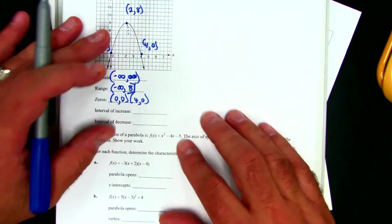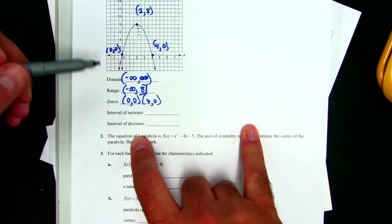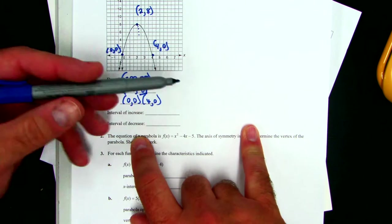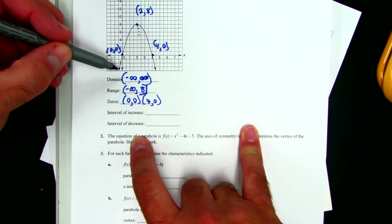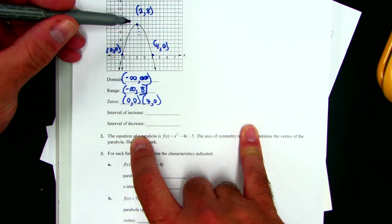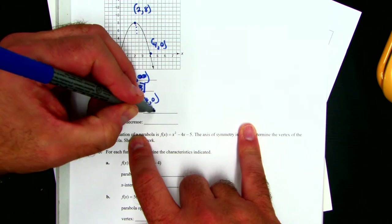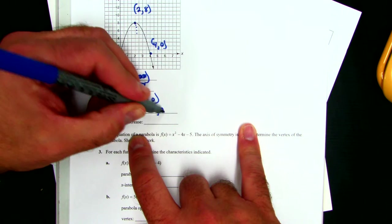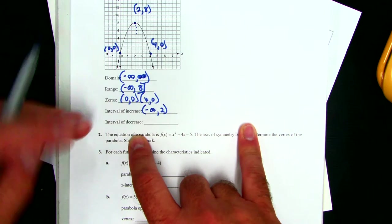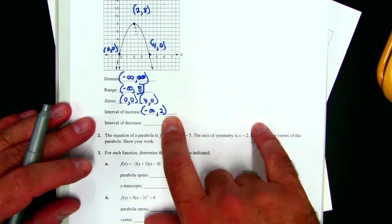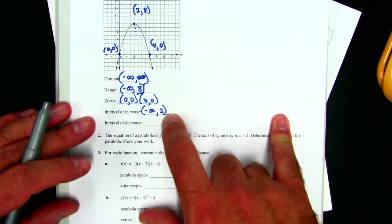Then you have an interval of increase. An interval of increase is going from left to right. So we use the x values to describe my left to right movement. And this is increasing from negative infinity up to the number 2. So this would be negative infinity to 2. And these would both be in parentheses because it does not include 2. 2 is the maximum. So it stops at 2. It's not increasing, nor is it decreasing.